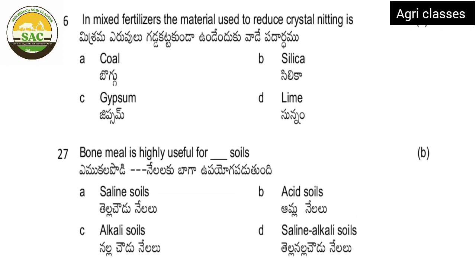In Mixed Fertilizers, the material used to reduce crystal knitting ease — the options are Kola, Silica, Gypsum, and Lime. The correct answer is Silica.